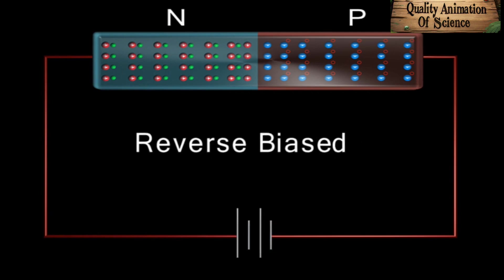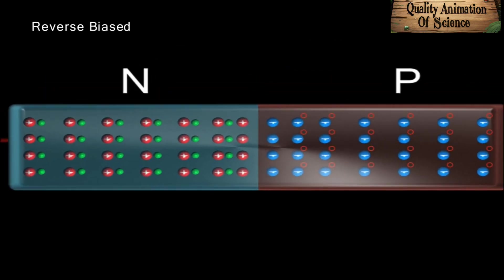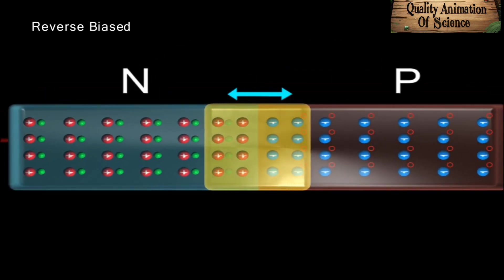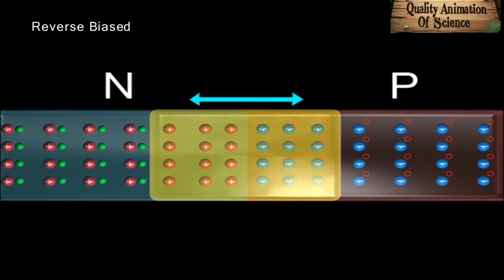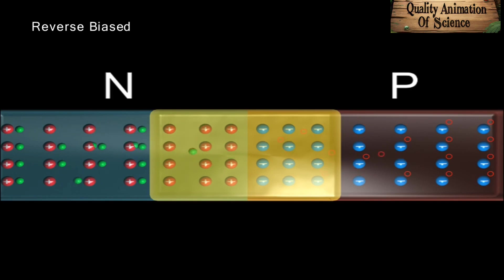With such a connection, the potential barrier across the junction increases by the externally applied voltage. Electrons now experience greater difficulty in moving to the P-side from the N-side due to the opposite direction of the electric field of the depletion layer. Similarly, the holes also find it more difficult to move under the effect of the force opposite to the direction of their motion from P-side to the N-side.